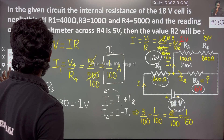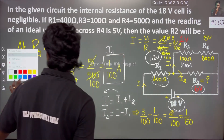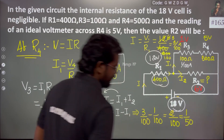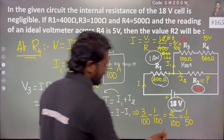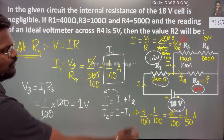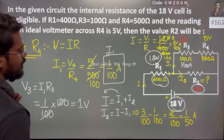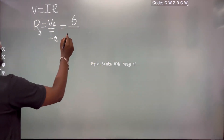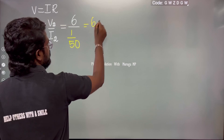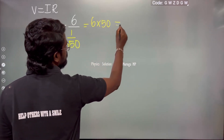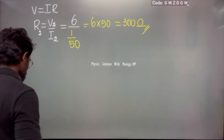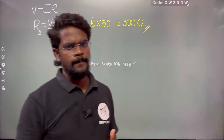I2 is 1 by 50. So R2 equals V2 divided by I2, which is 6 divided by (1/50), equals 6 times 50, which is 300 ohm. The value of R2 is 300 ohm.